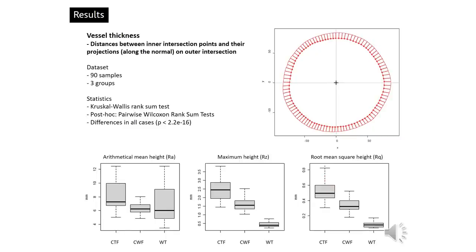Quite surprisingly again, there are small variations in vessel thicknesses. Variation in wheel-thrown ceramics is almost non-existent. Values of variations within the other two techniques also seem to be marginal — in the range of a few millimeters — which is quite interesting given the size of the vessels and the fact that their surfaces may contain small irregularities caused by the clay texture.